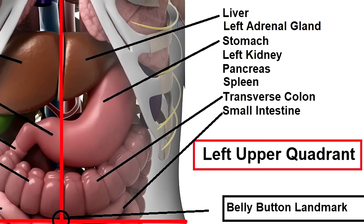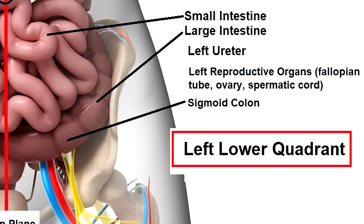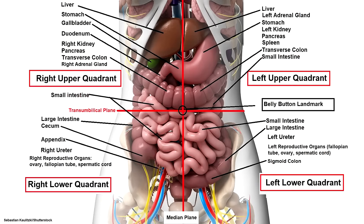In the left upper quadrant, we have the liver, stomach, pancreas, left kidney, spleen, and the left adrenal gland. The right lower quadrant contains the appendix, reproductive organs, and the right ureter. The left lower quadrant contains the left ureter, reproductive organs. And all four quadrants contain portions of the small and large intestines.